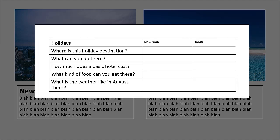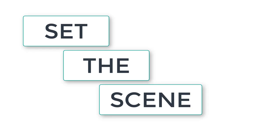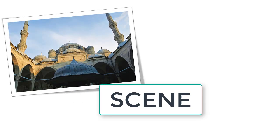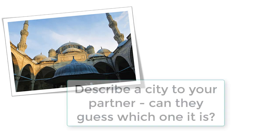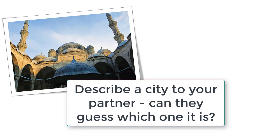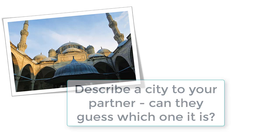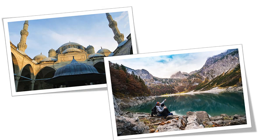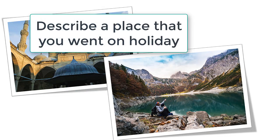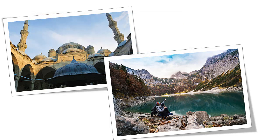Once you're prepared, what happens in the classroom? With any reading text, it's a good idea to set the scene and get them thinking about what they're going to read about. For example, get them to describe a city to their neighbour and see if the neighbour can guess, or get them to talk about a holiday they've enjoyed. That kind of personalised task often works well.